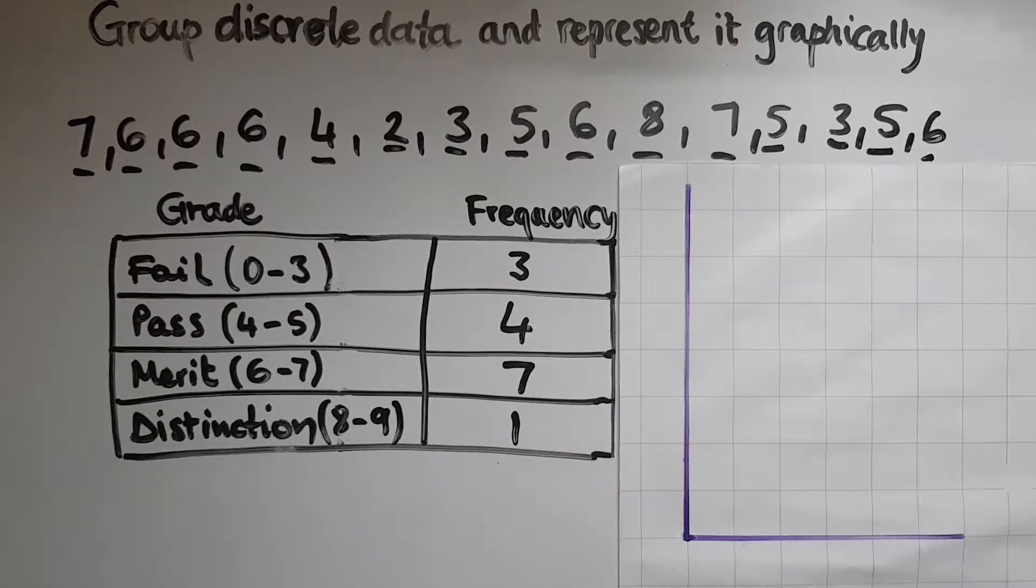They can't be 12.3. So those sizes of clothes are called discrete data. They can't be continuous like the decimals.